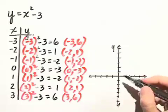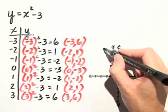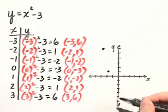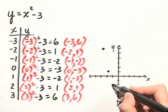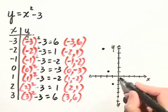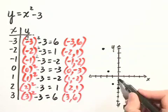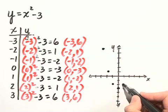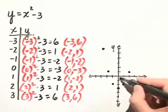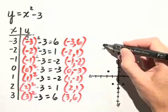Let's plot these points now, starting with negative 3. We go negative 3 in the x-direction and up 6 in the y-direction, and we plot that point. Negative 2 in the x-direction, 1 in the positive y-direction. Then we have negative 1 and negative 2. Then we have 0 — we don't move right or left, but the y-coordinate is negative 3, so we move down 3. Our next point is 1, negative 2 — so 1 to the right and down 2. Our next coordinate is 2, 1 — so 2 to the right and up 1. And our last coordinate is 3, 6. We plot that point and connect our points with a smooth curve, and we can see the resulting sketch is the graph of a parabola.